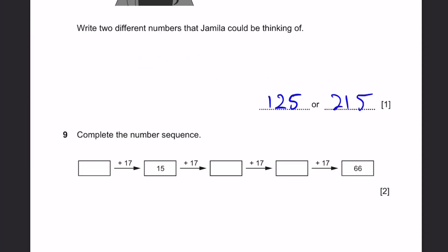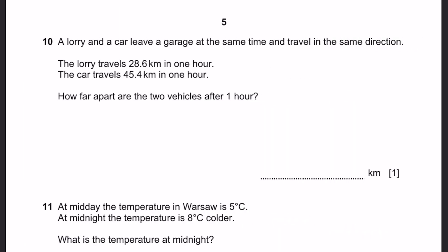Question 9. Complete the number sequence. Dash plus 17 is 15. That'd be minus 2 here. Plus 17, we get 32. Plus 17, we get 49. And plus 17, we get 66. Question 10. A lorry and a car leave a garage at the same time and travel in the same direction. The lorry travels 28.6 kilometers in one hour. The car travels 45.4 kilometers in one hour. How far apart are the two vehicles after one hour? We just subtract: 45.4 minus 28.6. The answer is 16.8 kilometers.